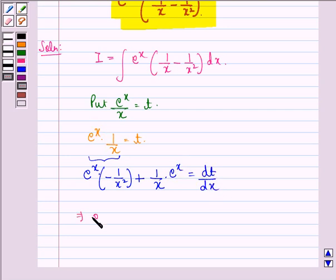This implies e^x(1/x - 1/x²)dx is equal to dt. This function is same as the function that we have in this integral.